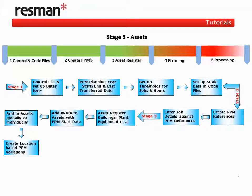Stage 3 covers interfacing with our asset register of medical devices, buildings, plants and equipment, getting ready to add our PPMs. We can add our PPMs either directly from within the asset record or from the PPM reference list globally to multiple assets.